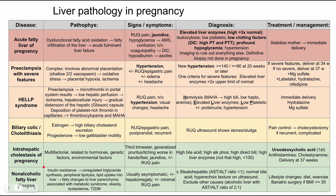Lastly, another disease not unique to pregnancy: non-alcoholic fatty liver disease, also called NAFLD. The pathophysiology is related to insulin resistance, which results in unregulated triglyceride synthesis, peripheral lipolysis, and lipid uptake into the liver. This is something people with metabolic syndrome get — people who are overweight or obese, usually have diabetes and insulin resistance. This results in fatty changes to the liver parenchyma. The signs and symptoms aren't much — this is usually asymptomatic. The patient might have hepatomegaly or minimal right upper quadrant pain, but it's often found incidentally on ultrasound or other imaging.